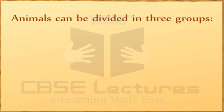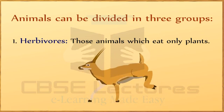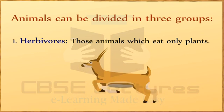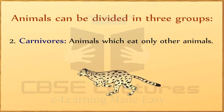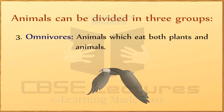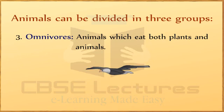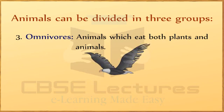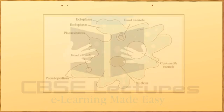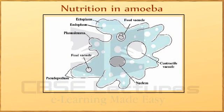Animals can be divided into three groups. First, herbivorous — those animals which eat only plants. Second, carnivorous — animals which eat only other animals. Third, omnivorous — animals which eat both plants and animals.